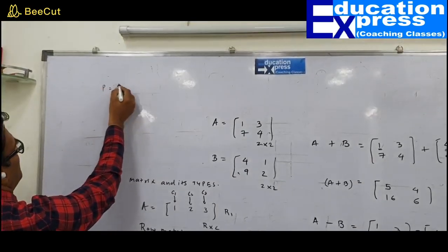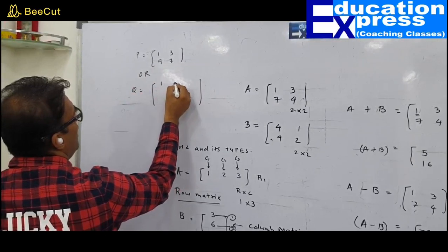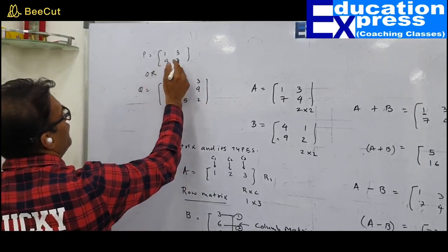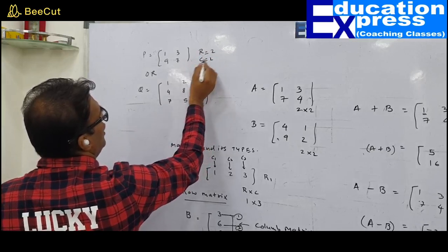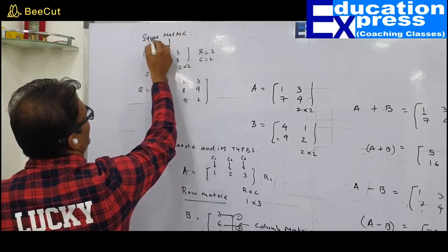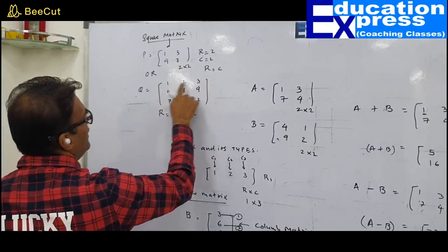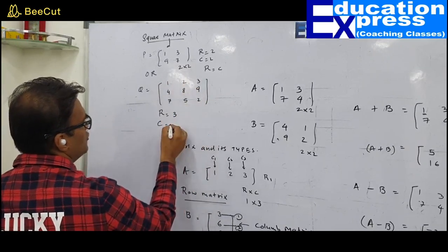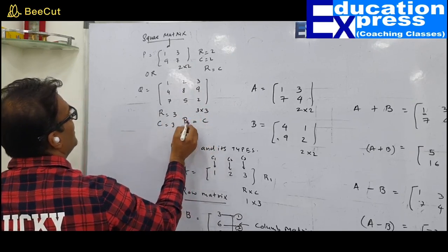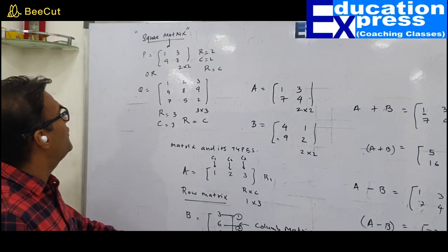Consider matrix P with elements [1, 3, 9, 7] — it has 2 rows and 2 columns, order 2×2. Since the number of rows equals the number of columns, this is called a square matrix. Matrix Q with 9 elements arranged in 3 rows and 3 columns is also a square matrix — order 3×3, since number of rows equals number of columns.